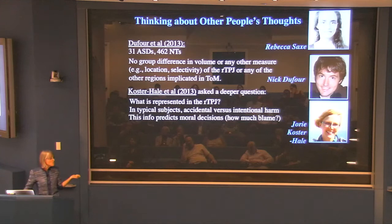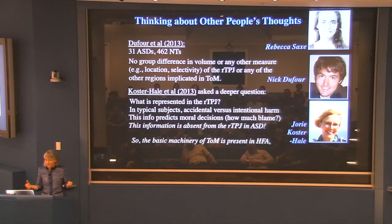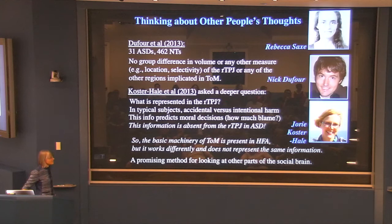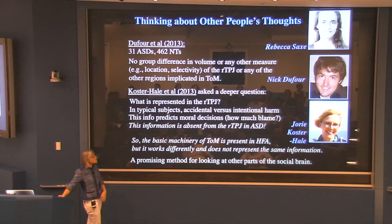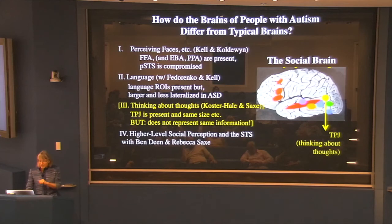So what do you see in people with autism? This information is absent in the TPJ of people with autism. That's pretty cool: the basic machinery is there, the basic system is present in people with autism, but it works differently and doesn't represent the same information. And people with autism also pay less attention to that distinction in their moral decisions.